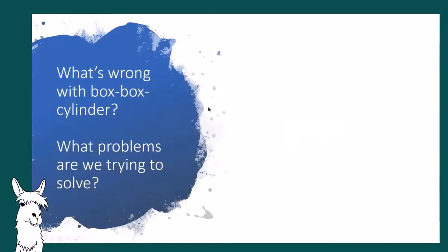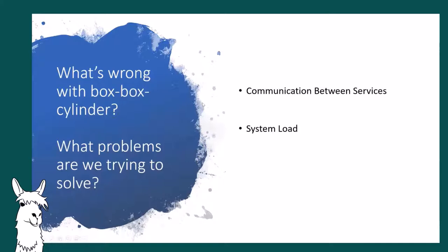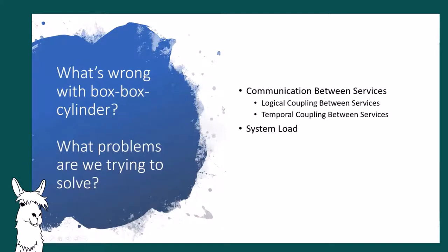I should probably explain the kind of problems that we're collectively trying to solve as an industry. This essentially falls into two categories: one is communication and the other one is load. With the box-box-cylinder model, you can end up with logical coupling and temporal coupling between services. And with system load, the worst thing that can happen is that the user has a poor experience because the system slows down.